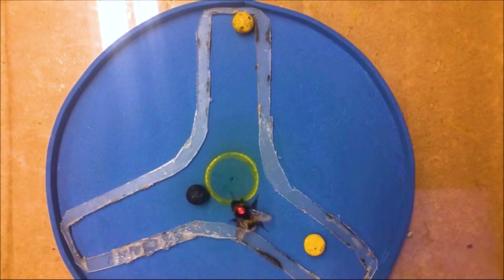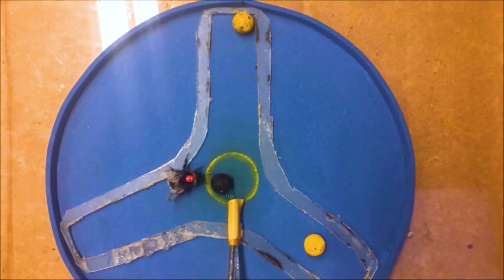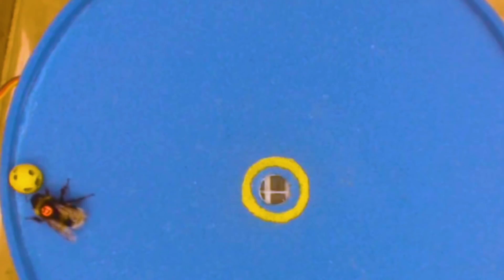But the bee still chooses it as the closest ball to the center. She knows she doesn't need a yellow ball specifically. Any ball will do to solve the problem. This kind of cognitive flexibility is previously unknown in insects. Clever girls!